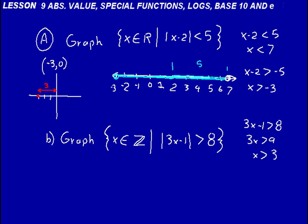Now we also need to consider negative numbers. We do that by saying 3x minus 1 — the relationship inside the absolute value sign — switch the inequality, change the sign on the right to negative 8, and now just solve this algebraically. So values of x greater than 3 as well as values of x less than negative 7 thirds will give us absolute values greater than 8.